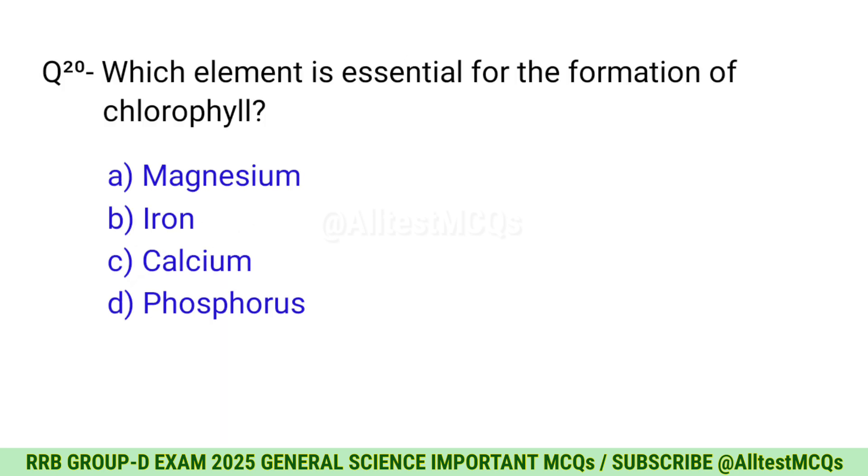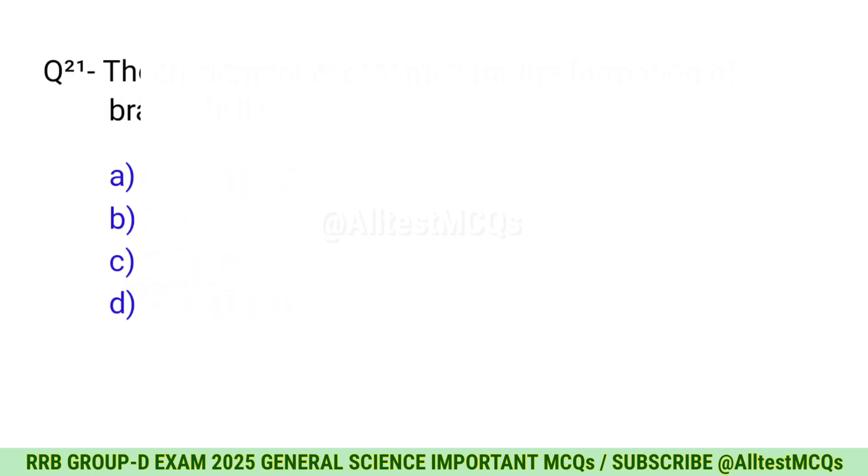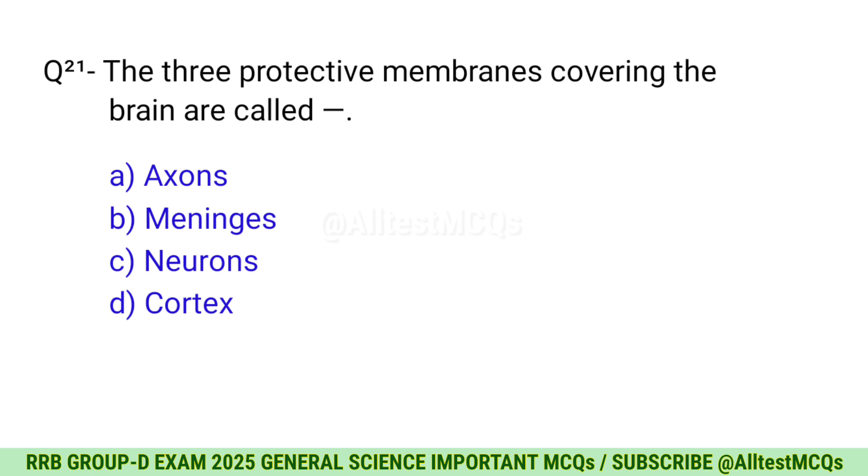Question 20: Which element is essential for the formation of chlorophyll? The right option is A, Magnesium. Question 21: The three protective membranes covering the brain are called? Correct option is B, Meninges.